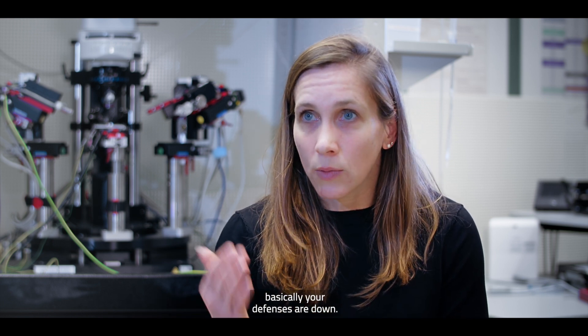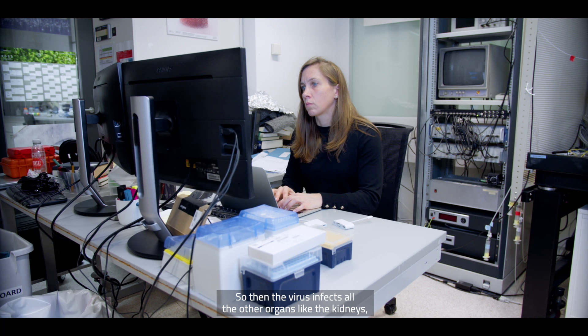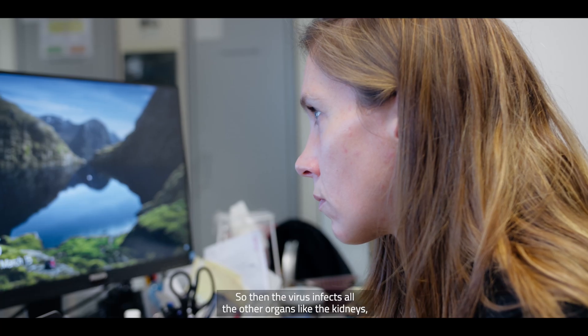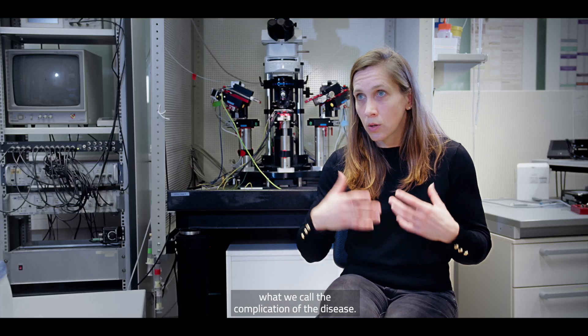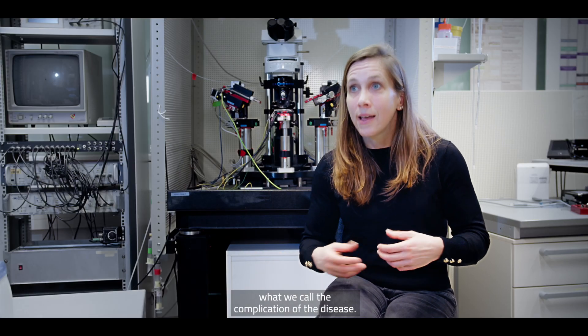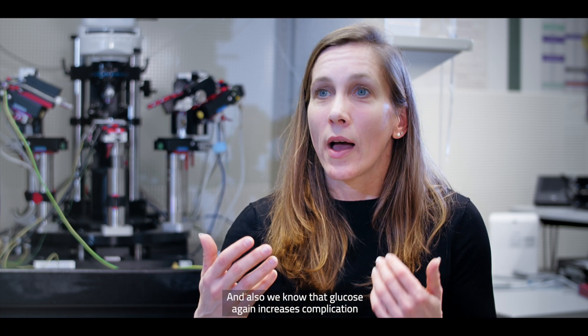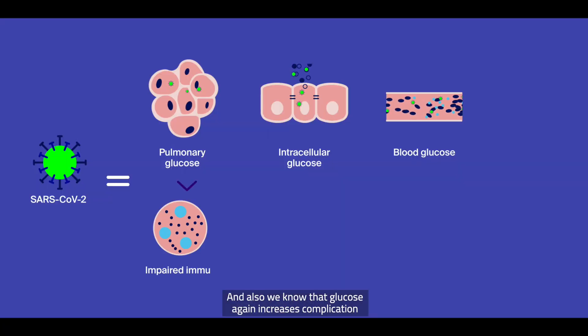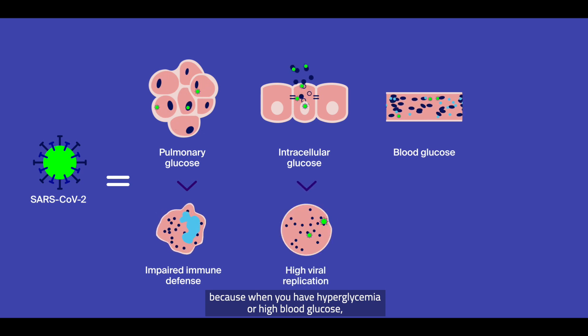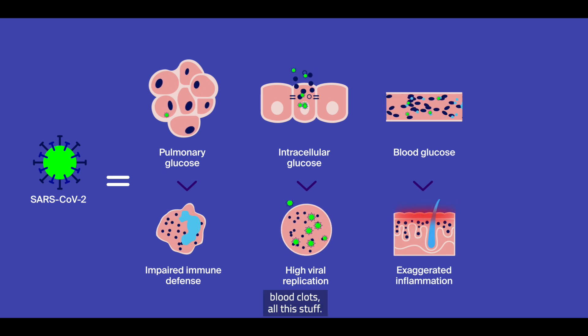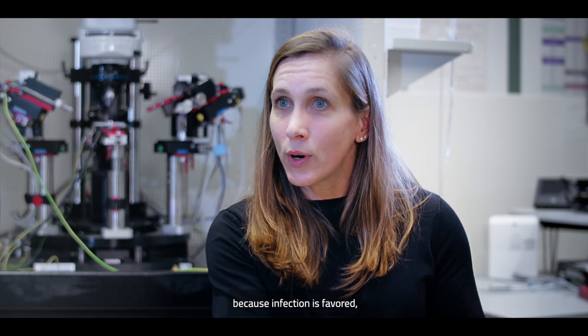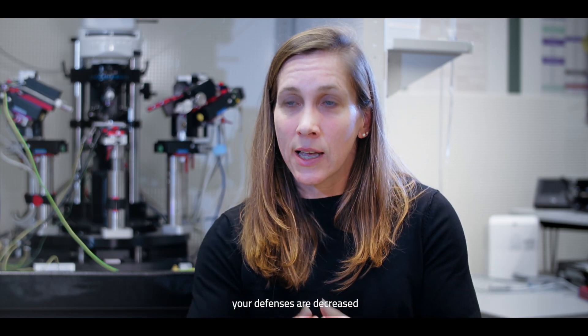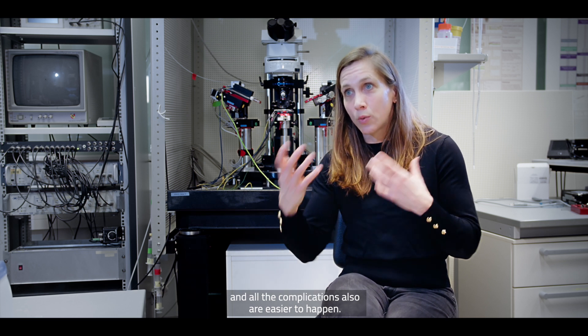So then the virus infects all the other organs, like the kidney, like the heart, and this provokes what we call the complications of the disease. And also we know that glucose again increases complication, because when you have hyperglycemia or high blood glucose, you are more at risk for cardiovascular disease, blood clots, all this stuff. So it's kind of an escalation of the disease, because the infection is favored, your defenses are decreased, and all the complications also are easier to happen.